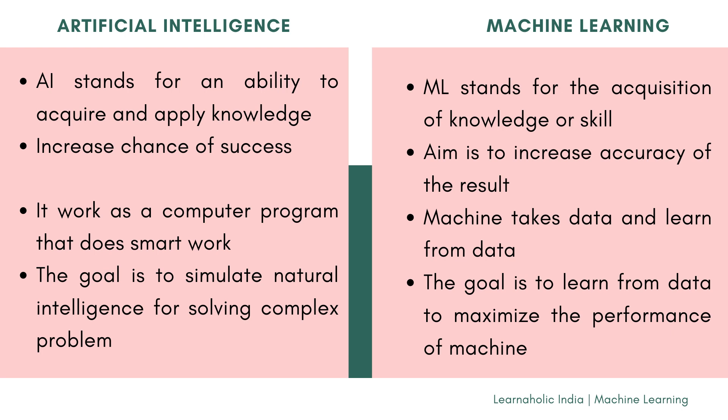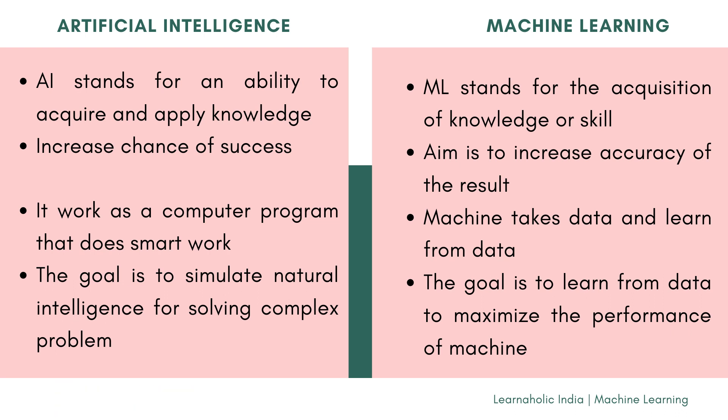Now let's move to the key differences between Artificial Intelligence and Machine Learning. AI stands for Artificial Intelligence, where intelligence is defined as the acquisition and application of knowledge. ML stands for Machine Learning, which is defined as the acquisition of knowledge or skills. The aim of AI is to increase the chance of success and not necessarily the accuracy, whereas in Machine Learning the aim is to increase accuracy regardless of success.